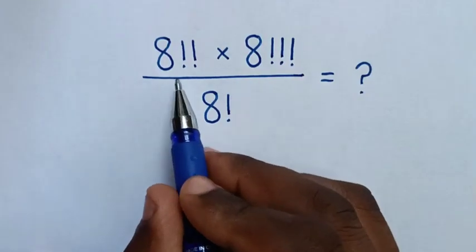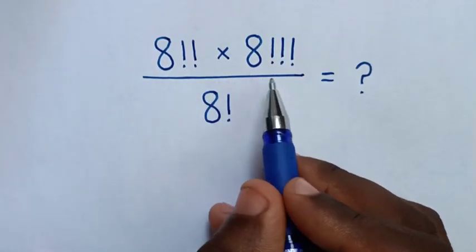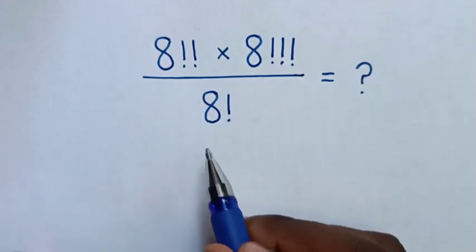Hello! How to solve 8 double factorial times 8 triple factorial over 8 factorial?